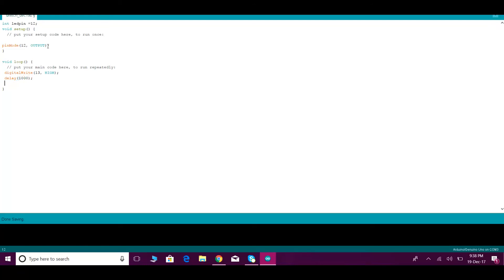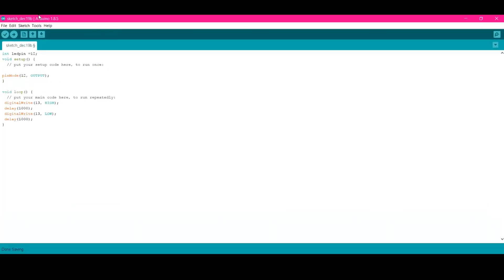Again give LOW, that means zero to the digital pin. To give 0 volts, write LOW command. Give delay after about, give any delay as you want, 1000. Now save the program.